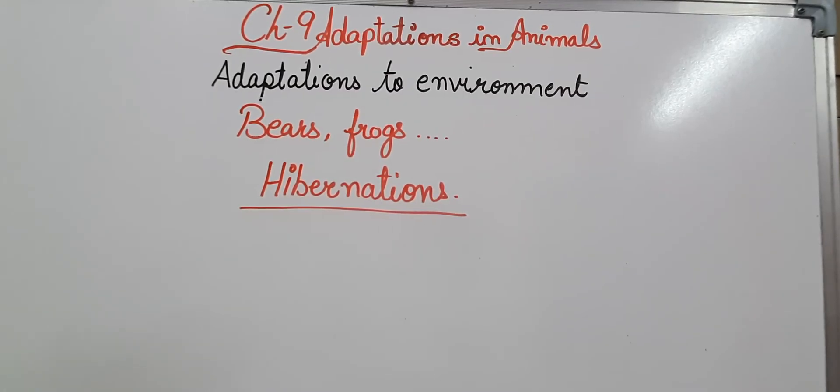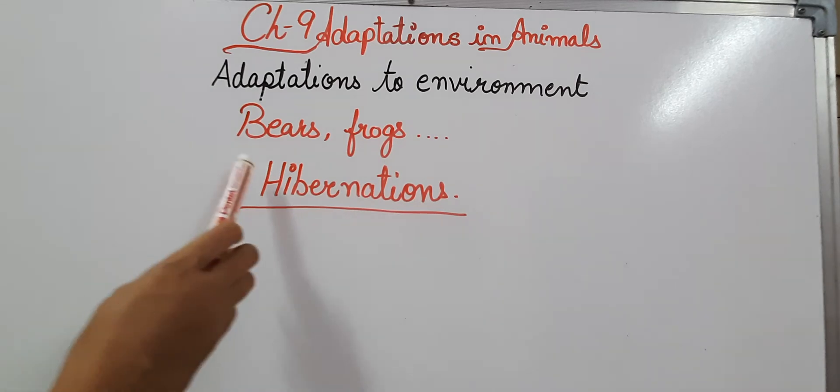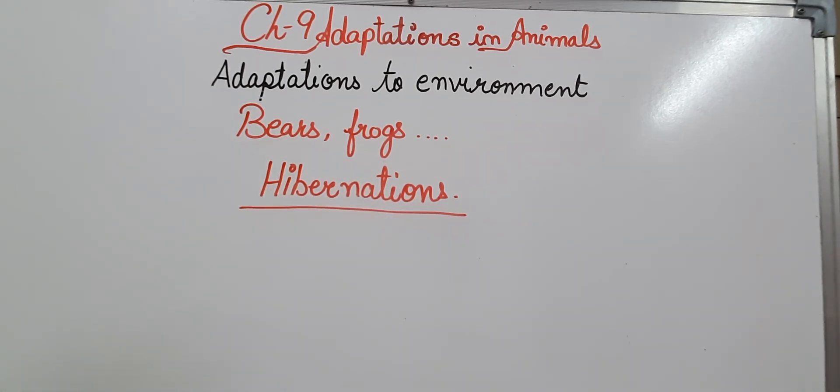When we talk about adaptations to the environment, especially the terrestrial animals, bear and frog, these animals can sleep for several months to protect themselves from the cold. So bear and frog generally sleep during the winter season and this winter sleep is known as hibernation so that they can protect themselves from the winter environment. So they sleep for that long time.